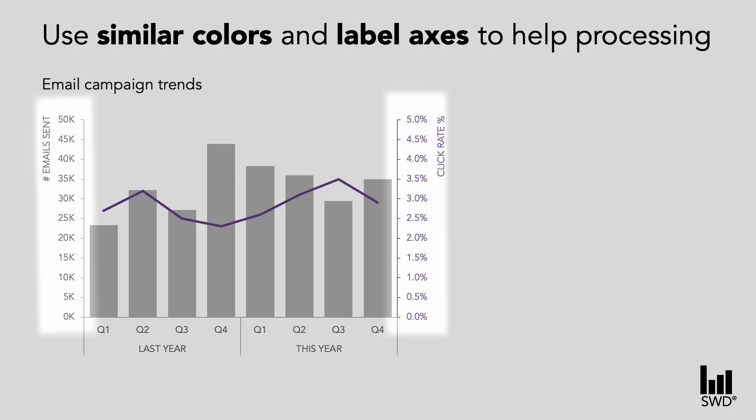Instead of having the legends at the bottom, moving them next to where our axes are would help. We could choose to color our axis labels and titles in the same style as the data, which would also help with that connection. While subtle, having a consistent number of intervals for each of our axes makes it a little less challenging to process. These aspects are easy to achieve, don't take a huge amount of time, and make understanding of this data slightly easier.